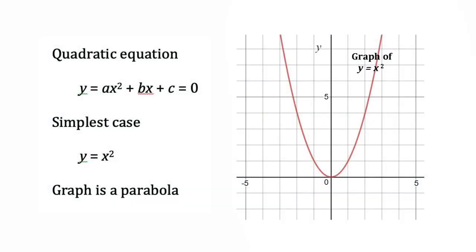The quadratic equation is one that has the form y equals ax squared plus bx plus c, where a, b and c are real numbers. The simplest case is when a is 1 and b and c are both 0, leaving us with just y equals x squared.